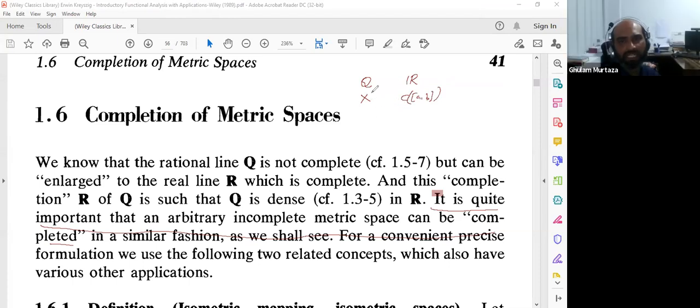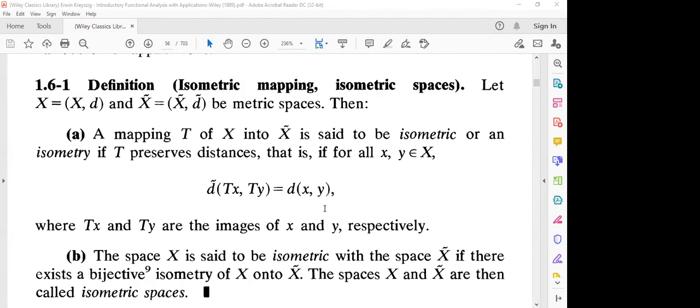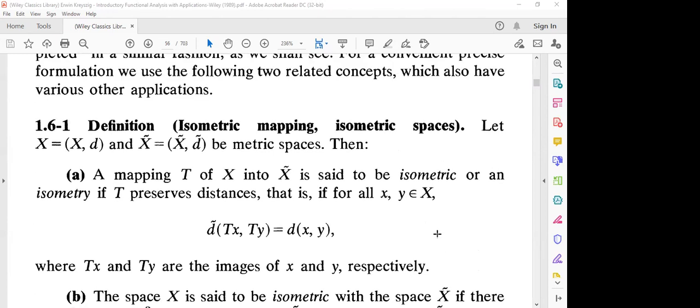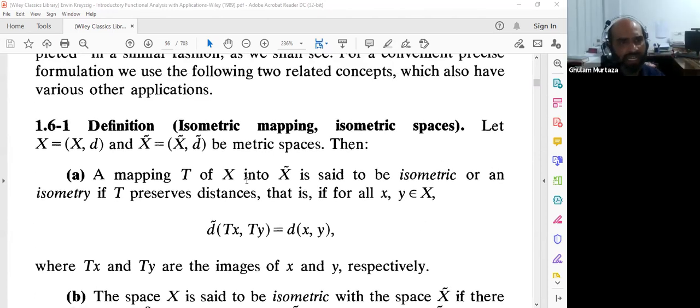We have to talk about this completion. Please see the definition: Let X and X̃ be metric spaces. A mapping from X into X̃ is said to be isometric, or an isometry.